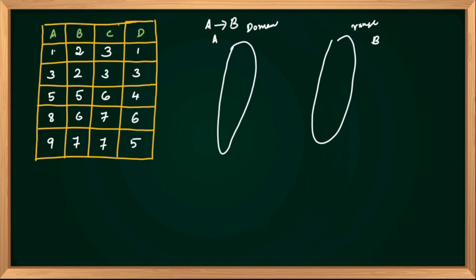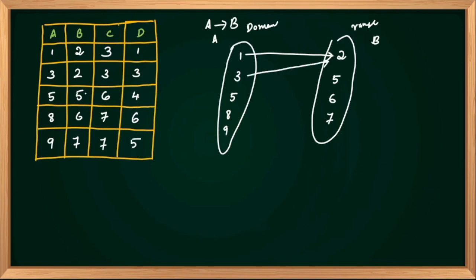In column A we have values 1, 3, 5, 8, 9 — with repeated elements. In column B we have values 2, 5, 6, 7. So 1 is mapped to 2, 3 is mapped to 2, 5 is mapped to 5, 8 is mapped to 6, and 9 is mapped to 7. This is actually a function. If you give the value of A, you can always get the value of B.